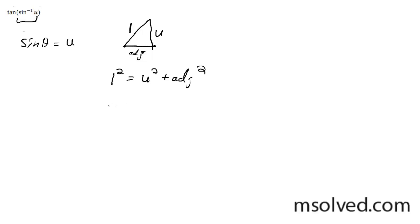I can rewrite this. I can find what the adjacent is by doing 1 squared minus u squared equals the adjacent squared. And simply, the adjacent or x is going to be equal to the square root of 1 minus u squared.